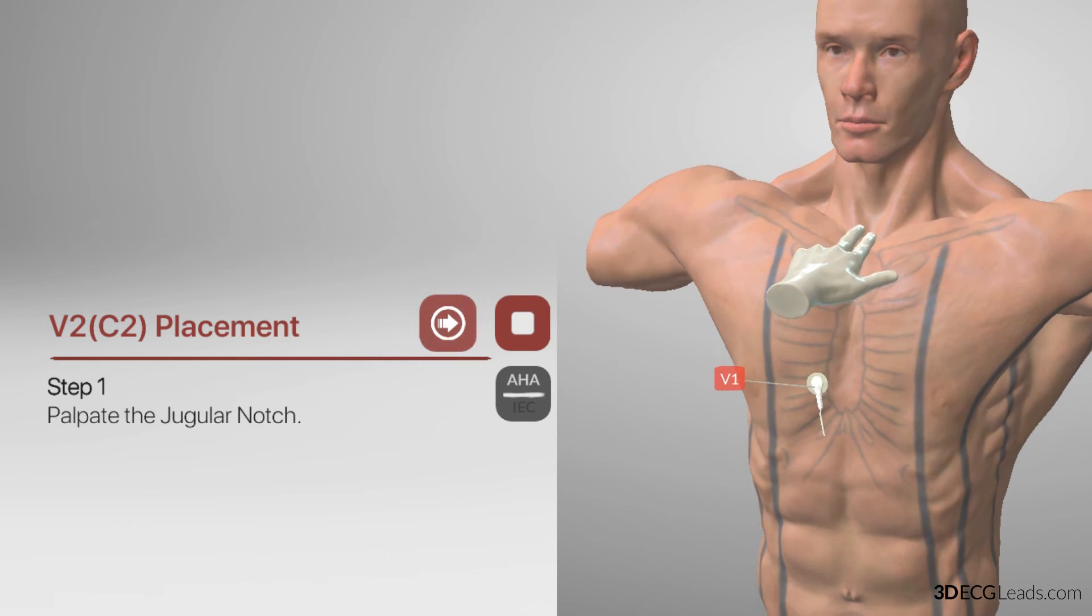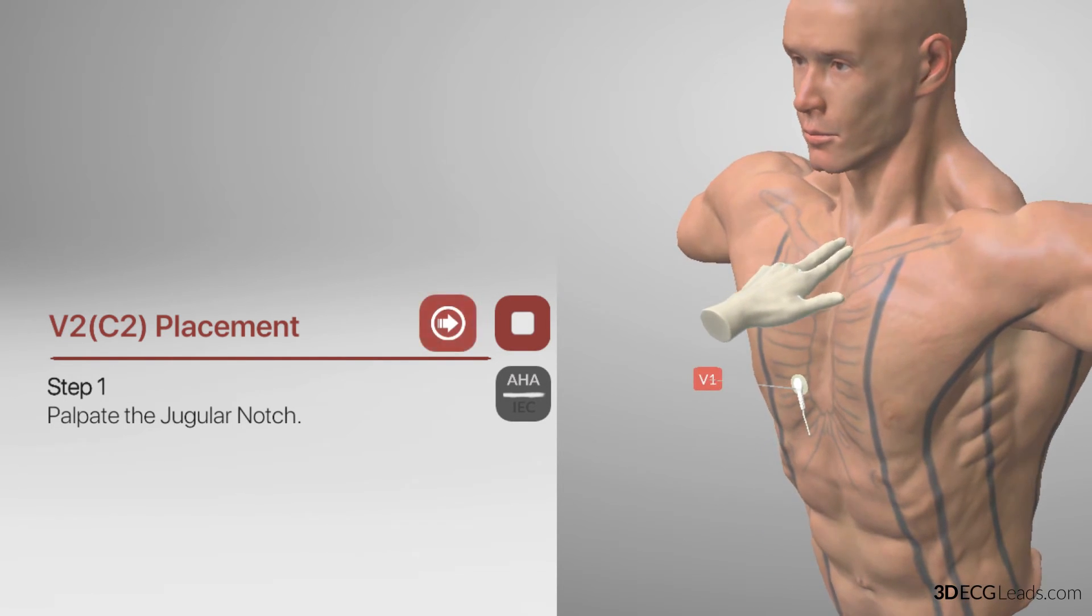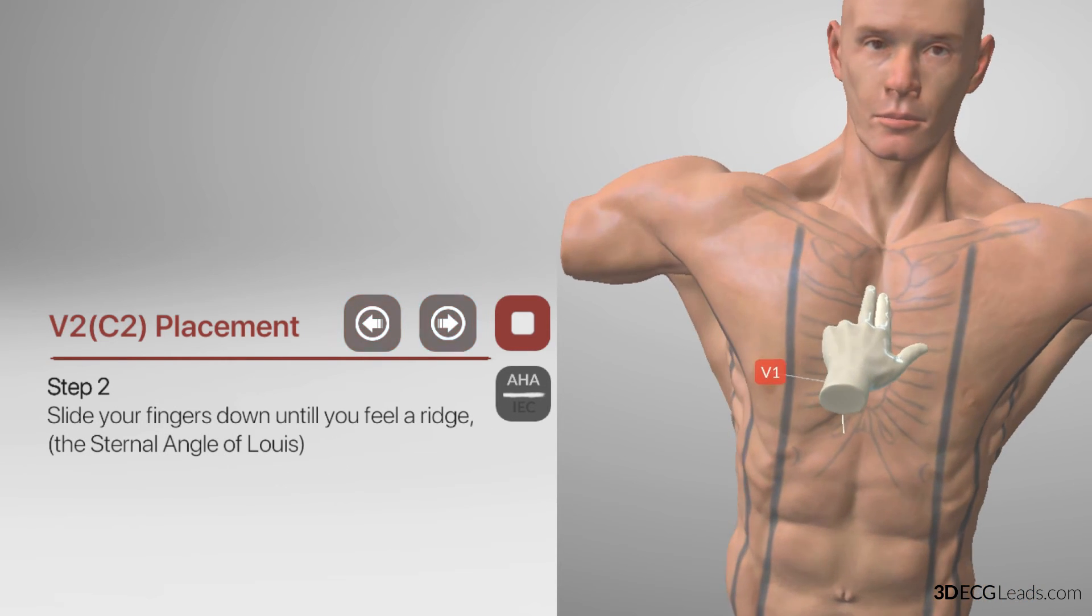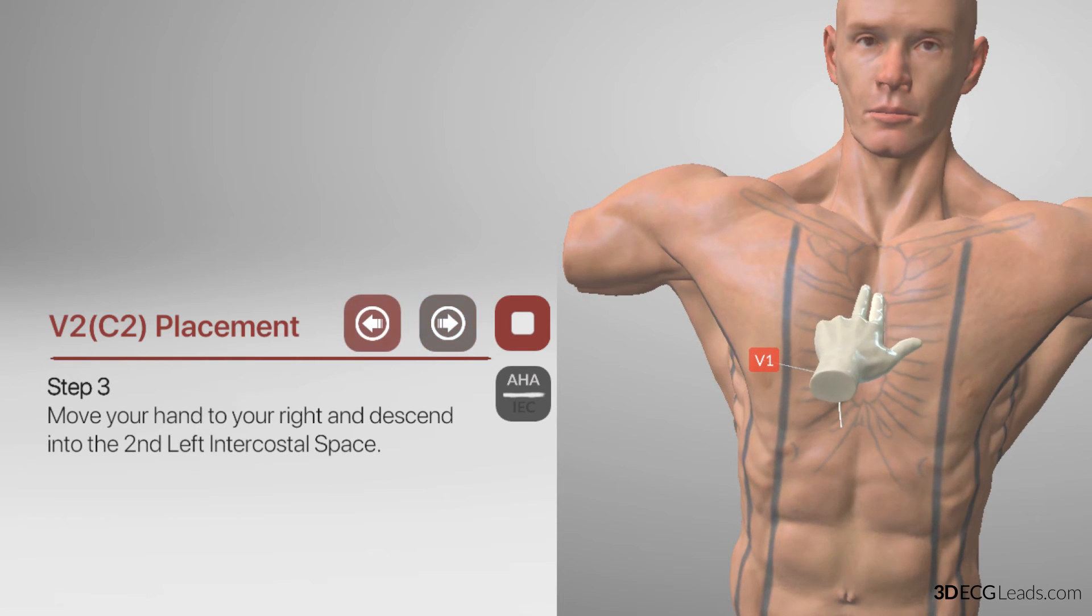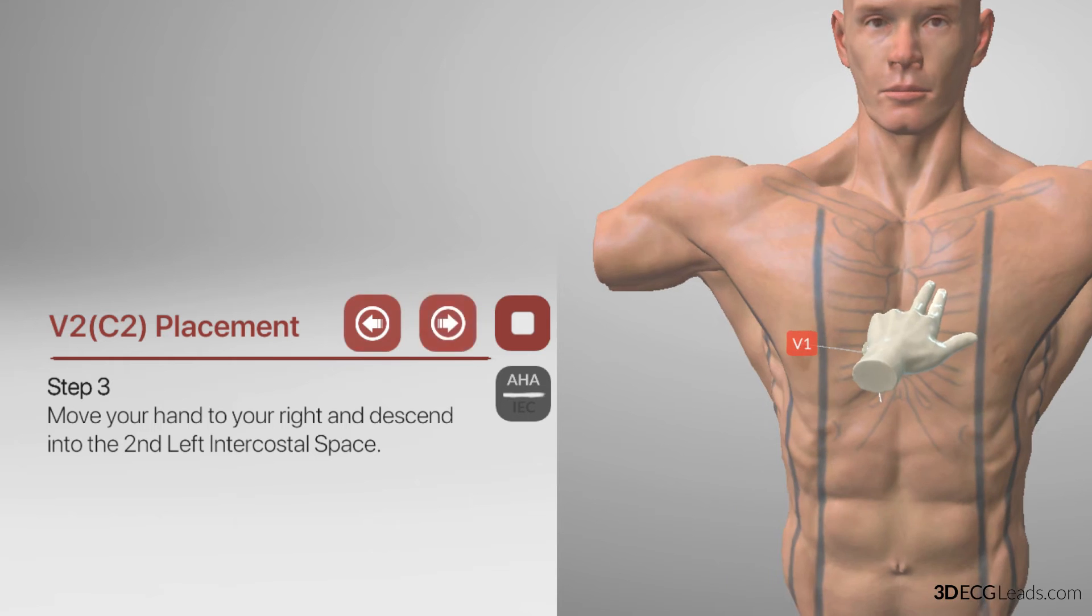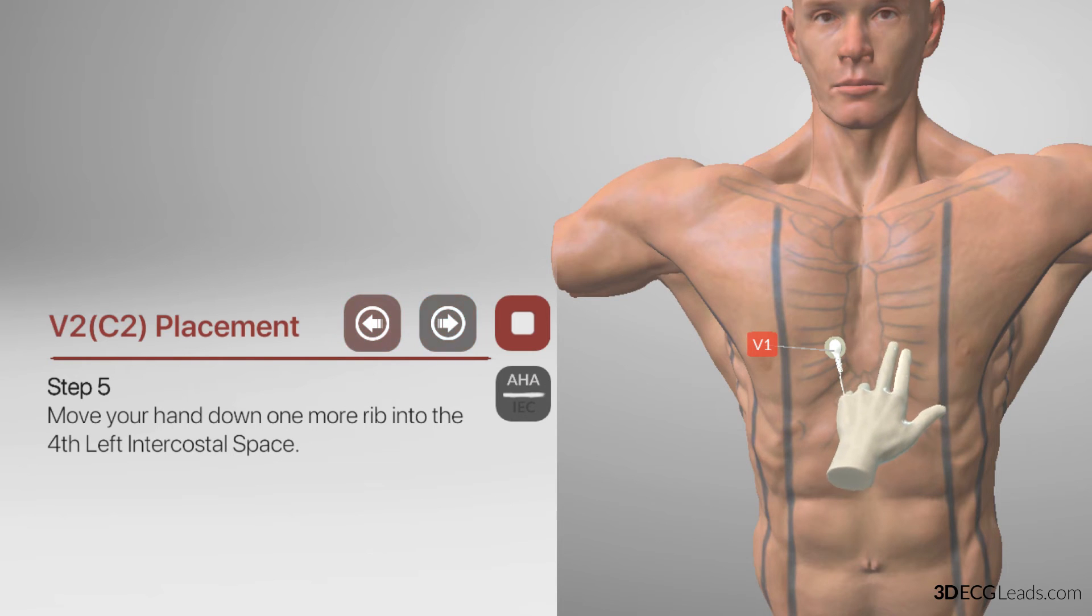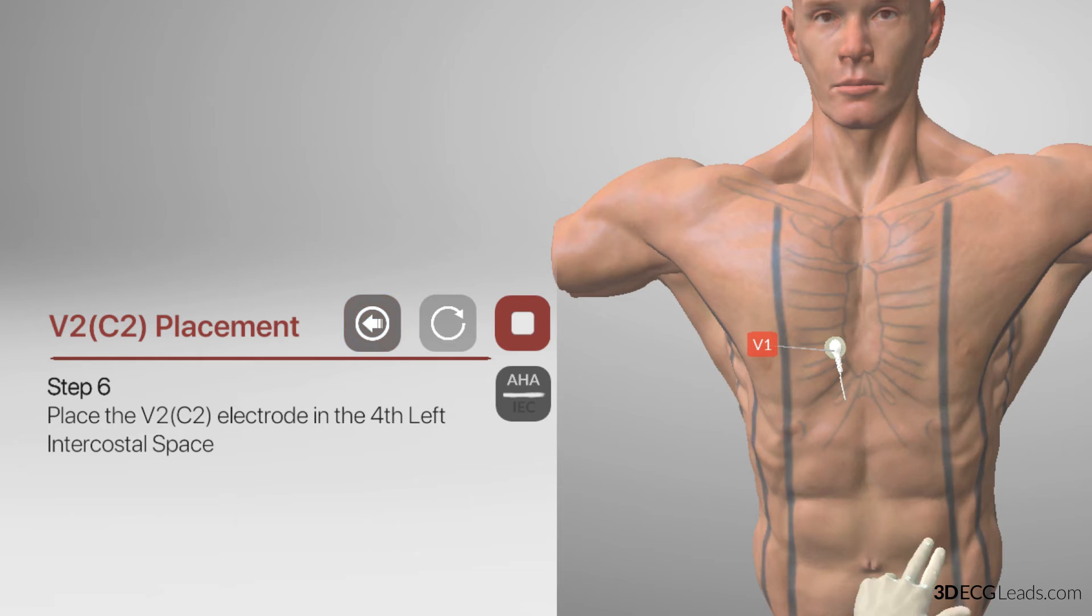So, after identifying the jugular notch, slide your fingers down to the sternal angle of Louis, in the same way we did for V1. But from here, move your hand to the right and slightly downwards into the second left intercostal space. And again, move your hands down another rib into the third left intercostal space, and now move your hand down one more rib. We are now in the fourth left intercostal space. Place the V2 electrode in the fourth left intercostal space on the left border of the sternum.